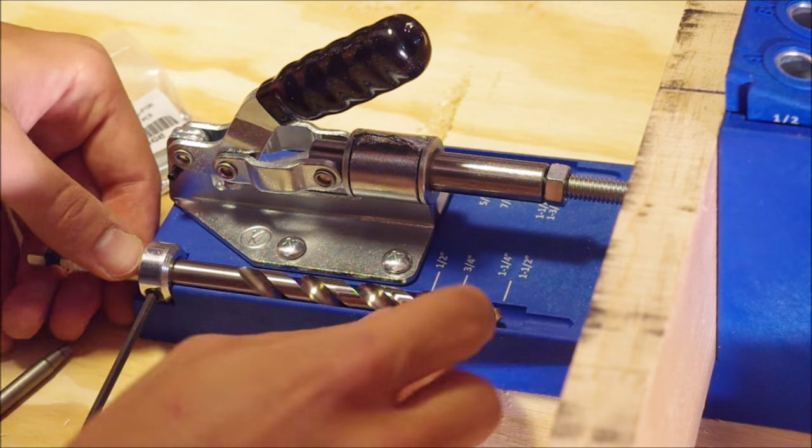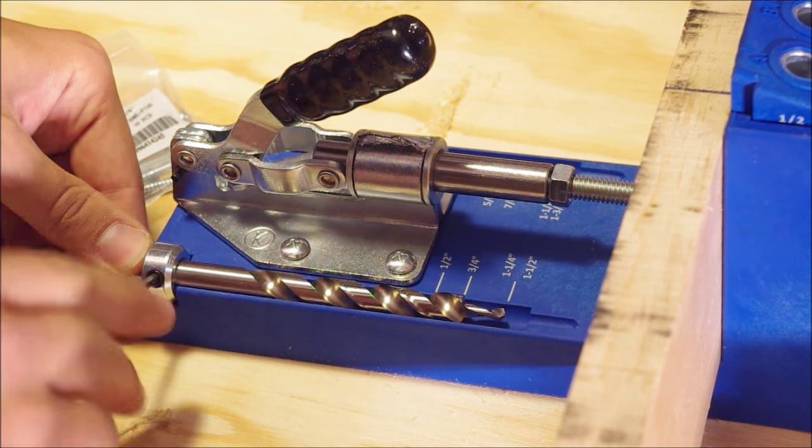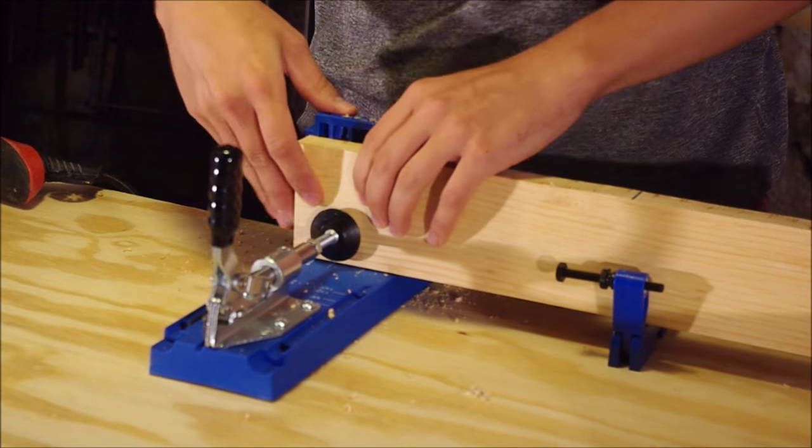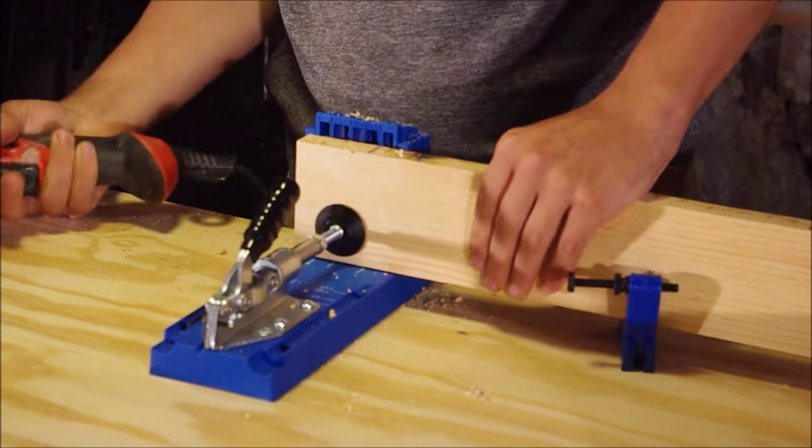Mark three lines for your pocket holes. Adjust your Kreg jig to half inch and drill the holes in all five of these spacers.